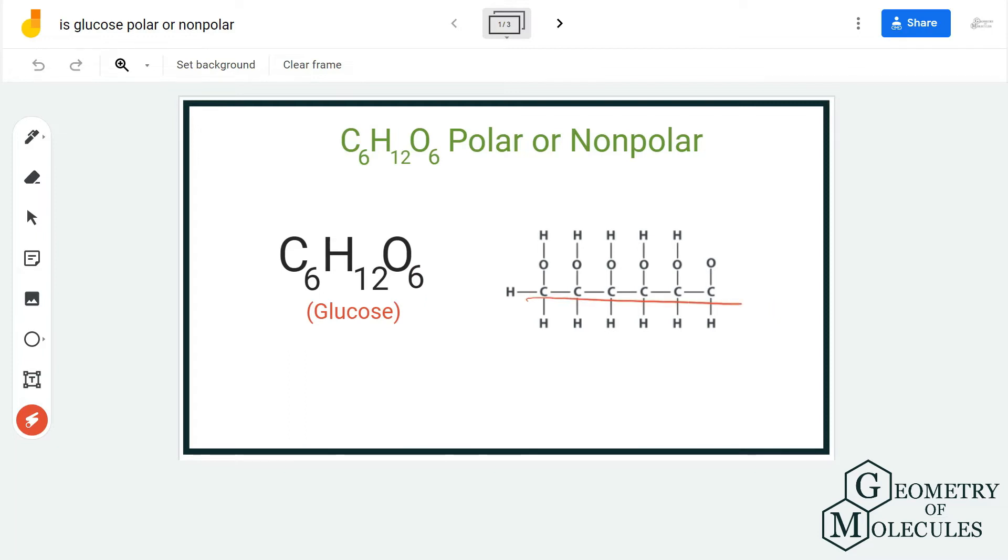It has six carbons, 12 hydrogens, and six oxygen. This is the chemical formula for glucose. When you look at this structure, you can see that it is made up of three types of atoms: carbon, hydrogen, and oxygen.